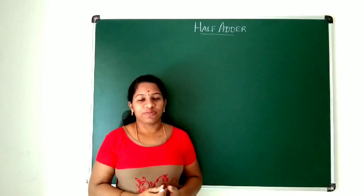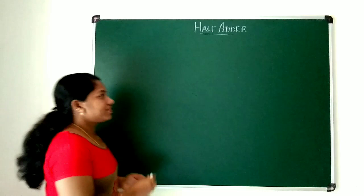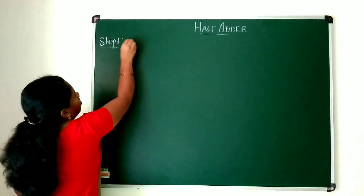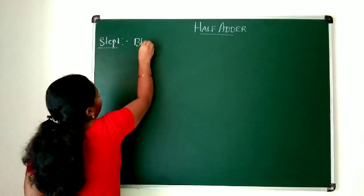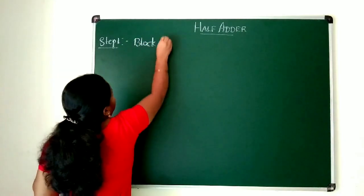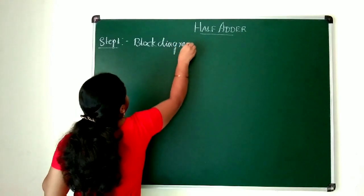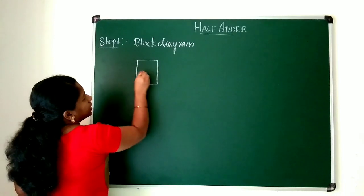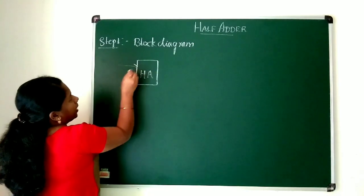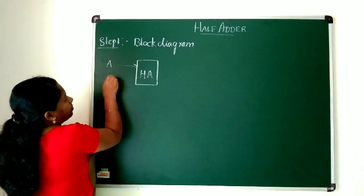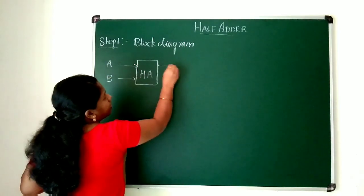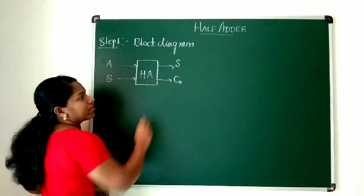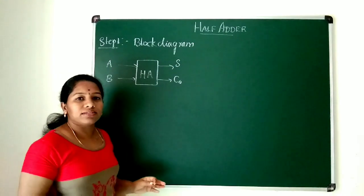Let's construct a logic circuit for a half adder. The very first step is to write a block diagram. When you write the block diagram, you get a clear idea about the number of inputs and outputs. For this half adder, I will be taking two inputs, A and B, and I will be getting outputs which are sum and carry out. I will represent sum as S and carry out as C₀.